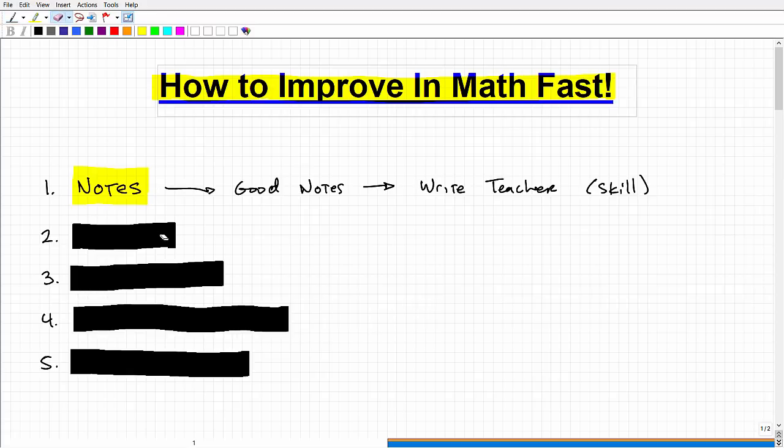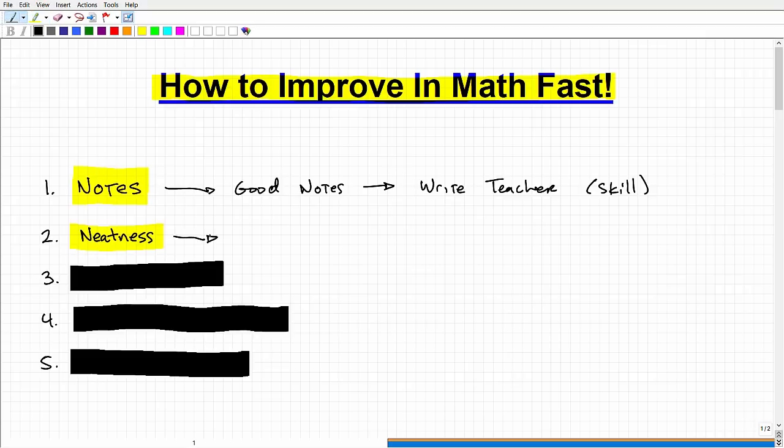Let's go to our second thing here, and that is neatness. For some reason or another, this seems to be more of a problem for males, young men, boys, adults. For me, I was very sloppy. So if you're sloppy, that's a problem. Remember, math is a language.